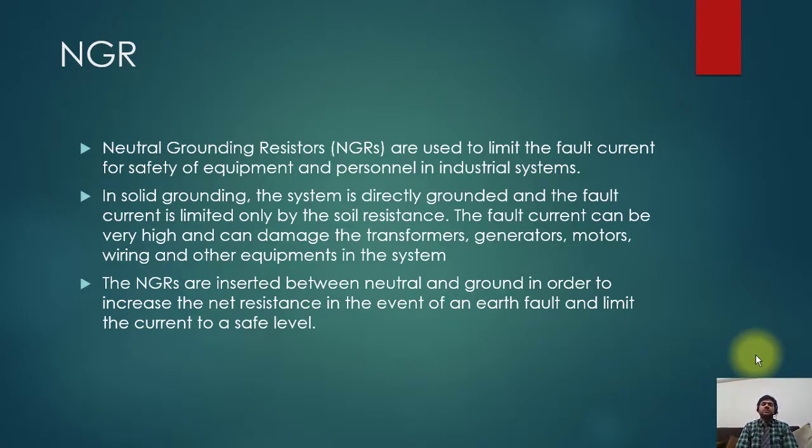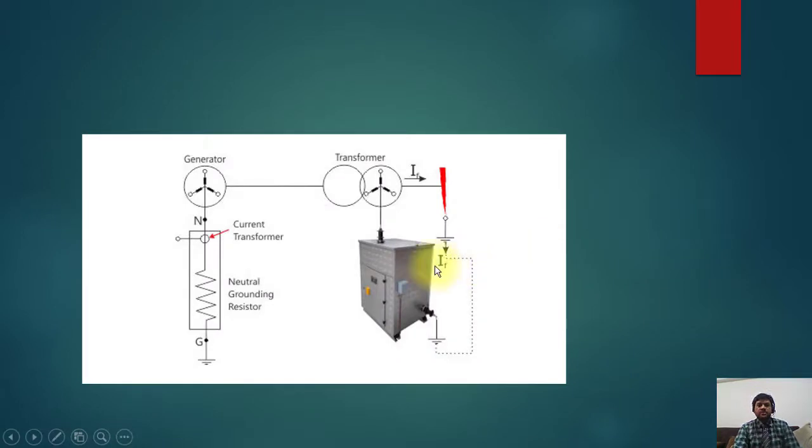The NGRs are inserted between neutral and ground in order to increase the net resistance in the event of earth fault and limit the current to a safe level. So the basic principle is when the fault is coming here, you can see the example of NGR.